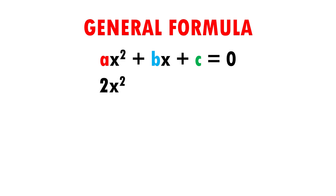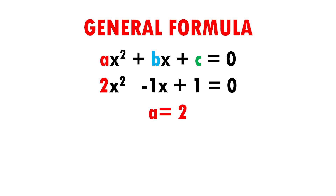To finish, I have 2x squared minus x plus 1 equals 0. The letter a equals 2 because it is the number by the x squared. The letter b equals minus 1 because although there is no number written, it is understood that it is 1 and the sign is negative — it's minus 1. And the letter c equals 1 because it is the number that stands alone.